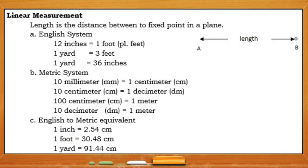Now for the linear measurement, we will be measuring the length. The length is the distance between two fixed points in a plane. First, you have the English system. We have inches - 12 inches equals one foot, one yard is three feet, and one yard also is equivalent to 36 inches because three feet times 12 equals 36.